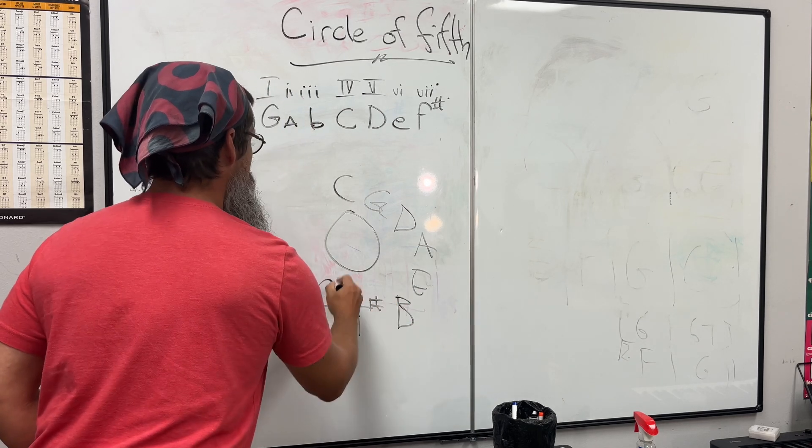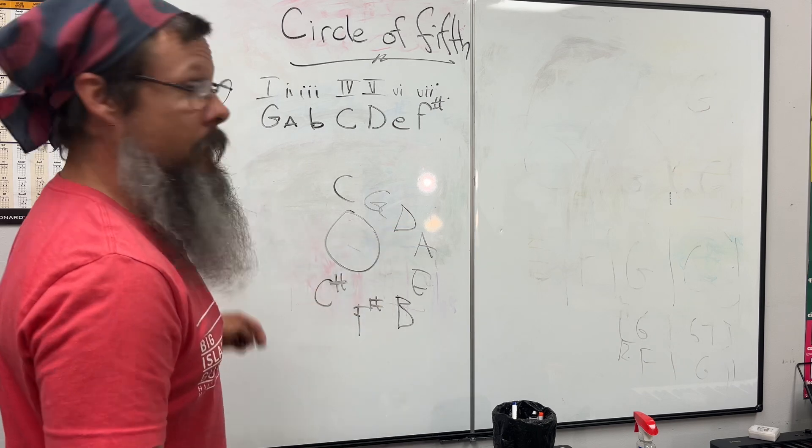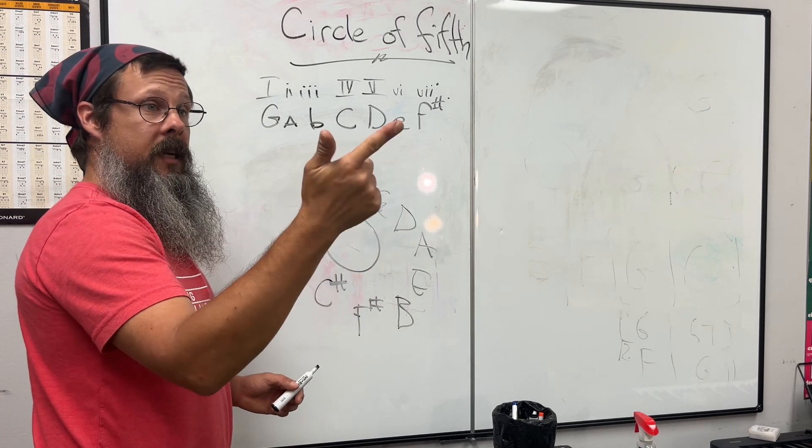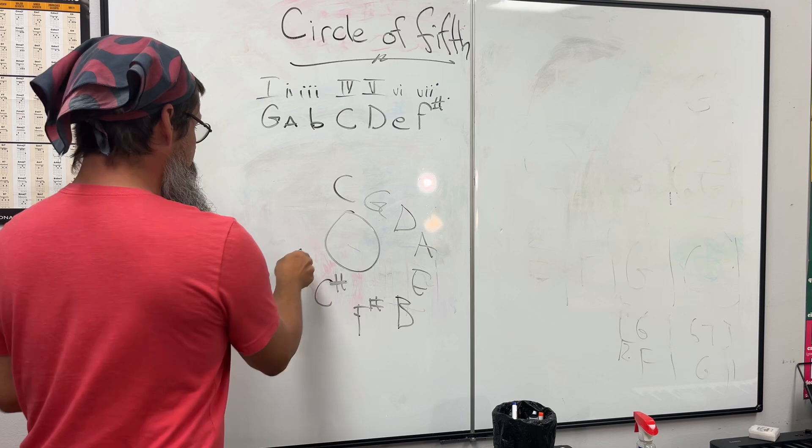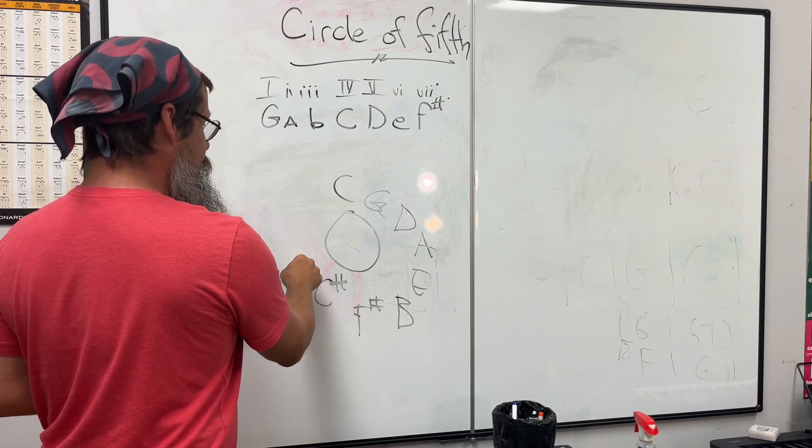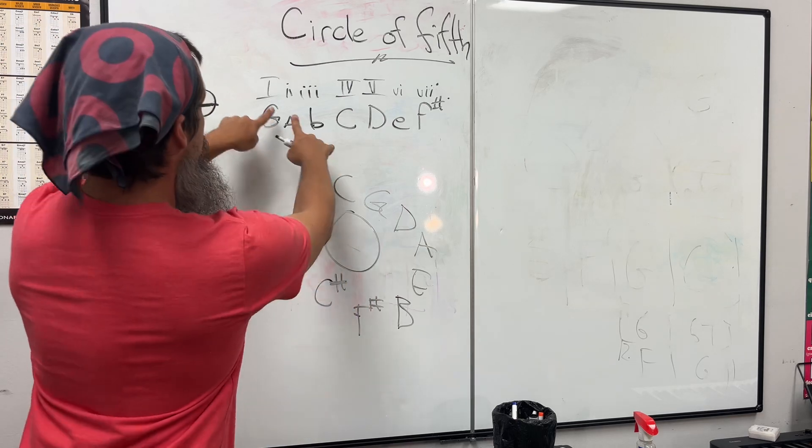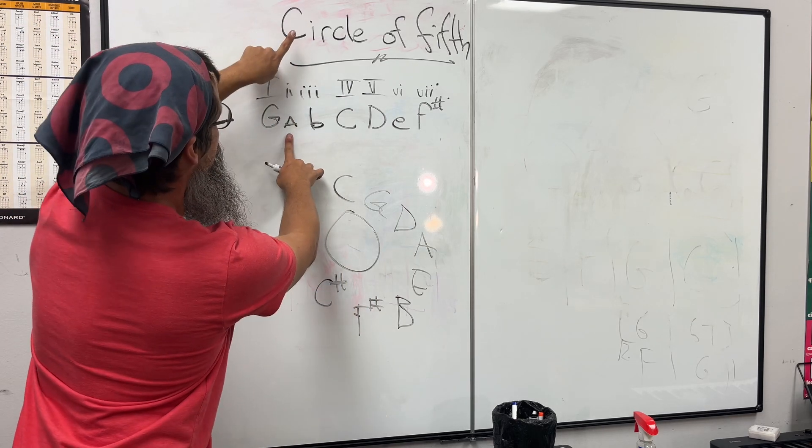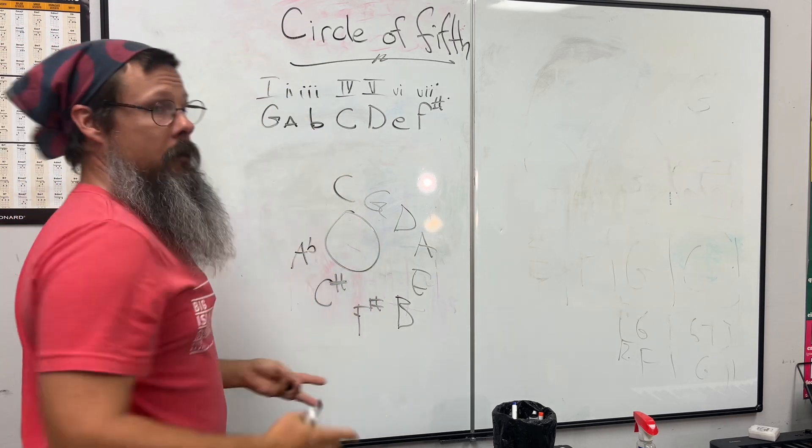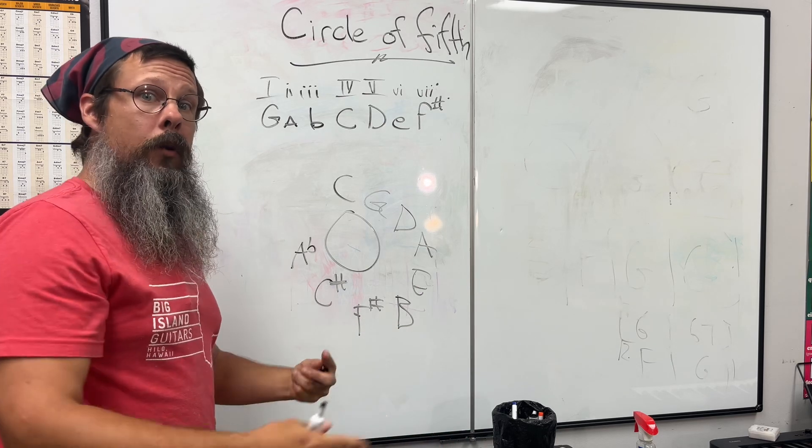F sharp goes to C sharp. Now we could continue this if we went C-D-E-F-G, we would get a G sharp. Now G sharp is G sharp, but it's actually an A flat if you think about it. All notes - G sharp augmented is A flat diminished.